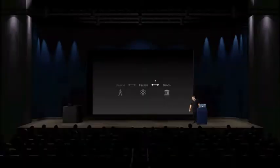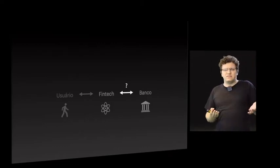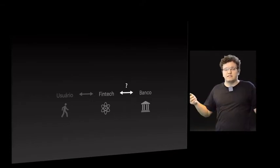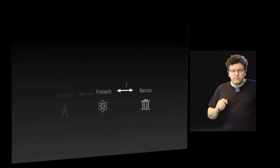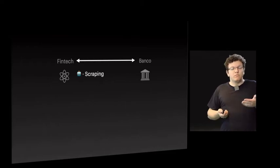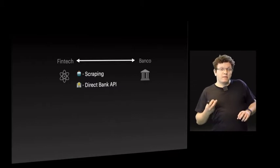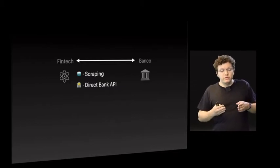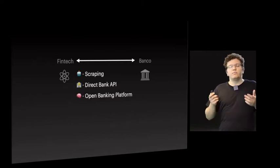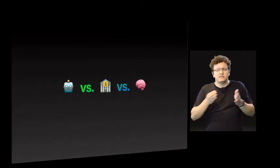Como é que a fintech faz para conseguir obter esses dados? Que opções ela tem? Basicamente, ela tem: scraping, acesso direto à API — que pode ser uma API regulatória ou uma API feita sob medida para aquela fintech pela instituição — ou ainda via uma plataforma de Open Banking. Vamos entender melhor as diferenças entre essas três formas de conexão.